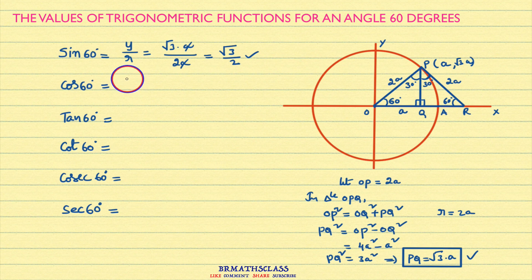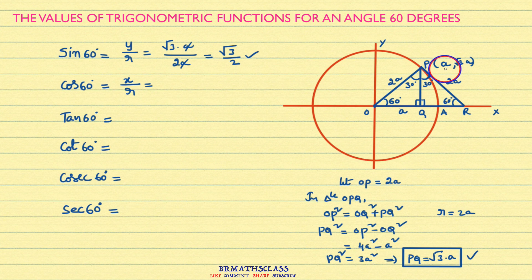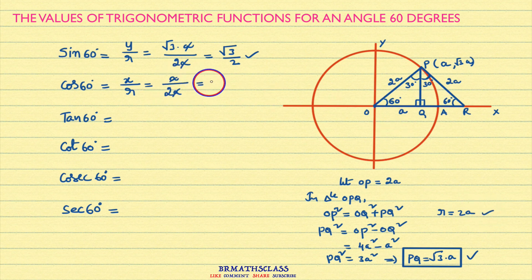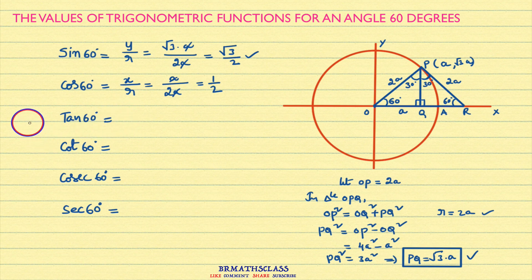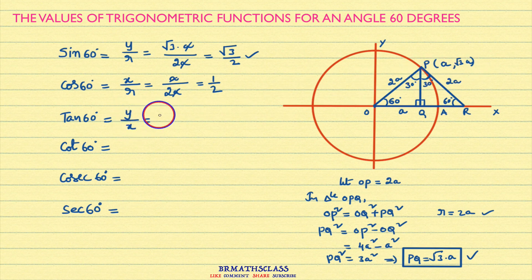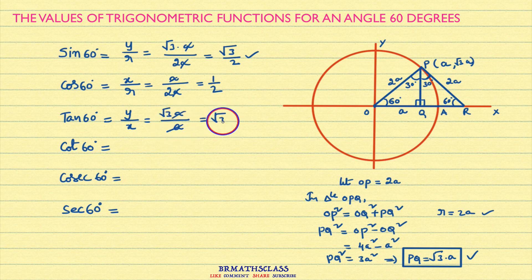Now, cos 60 degrees. From the definition of trigonometric functions, cos θ is defined as X divided by R. X is the X coordinate of this point, which is A, divided by R, which is 2A. The A's cancel, giving cos 60 degrees equals 1 by 2. Similarly, we can find tan 60 degrees. Tan θ is defined as Y divided by X. The Y coordinate is root 3 times A divided by the X coordinate A. The A's cancel, giving tan 60 degrees equals root 3.